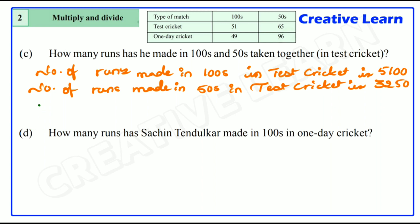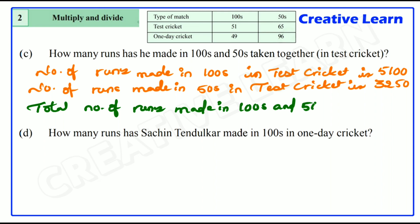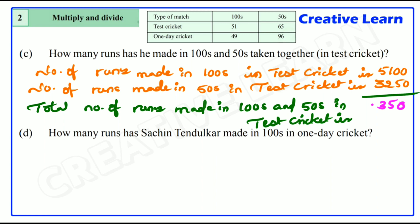Now total number of runs made in centuries and half-centuries in test cricket: just add the two. 5,100 plus 3,250 equals 8,350 runs. This is the answer.